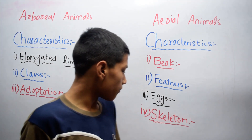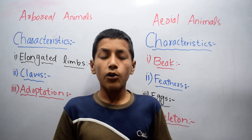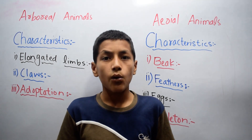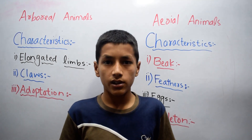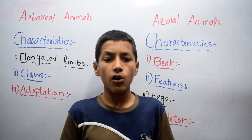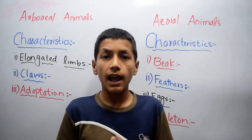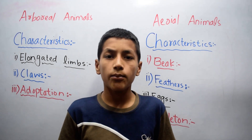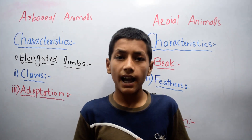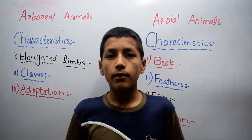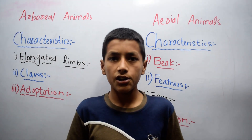The fourth characteristic is skeleton. Most birds have a lightweight skeleton with hollow bones. These hollow bones help them to keep their body light. This was all about arboreal animals and aerial animals and their characteristics.